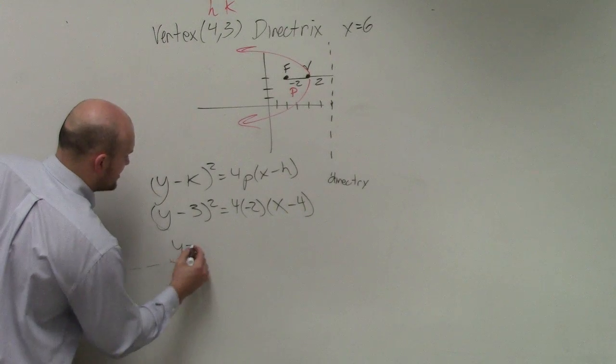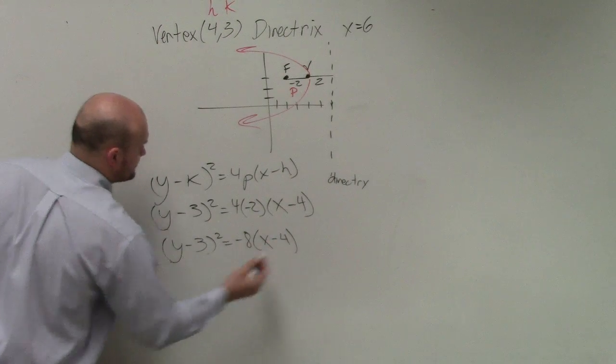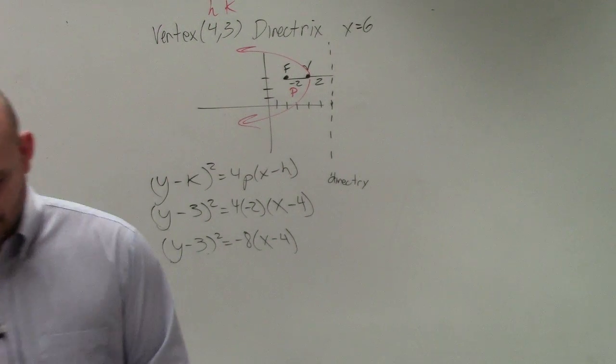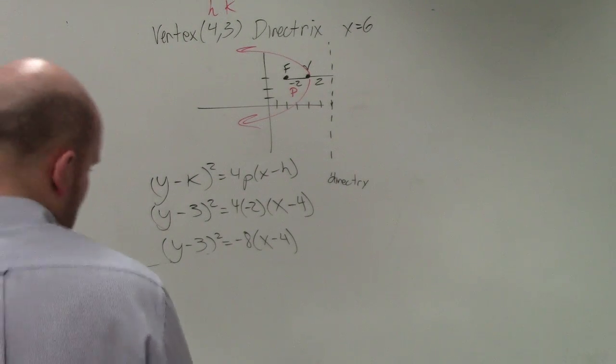So my final answer is (y - 3)² = -8(x - 4). And that's all they asked. Done. OK? They just said write the equation, right?